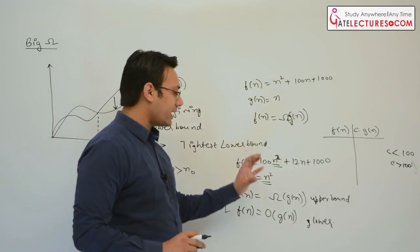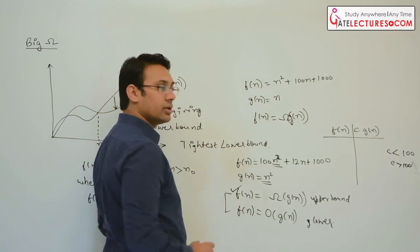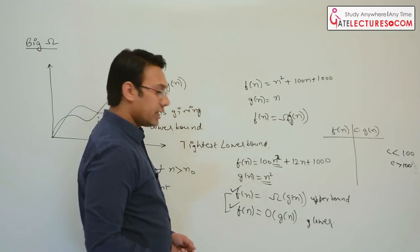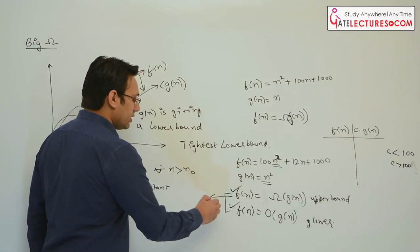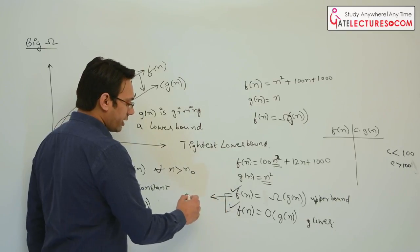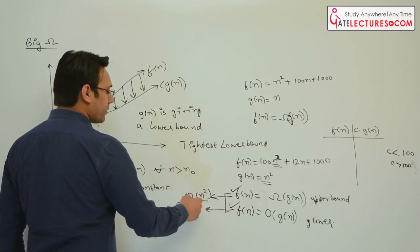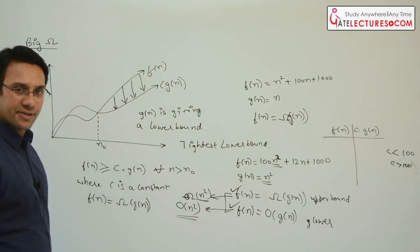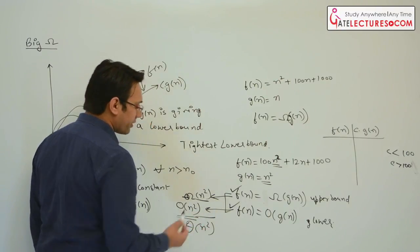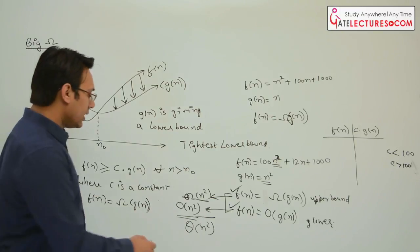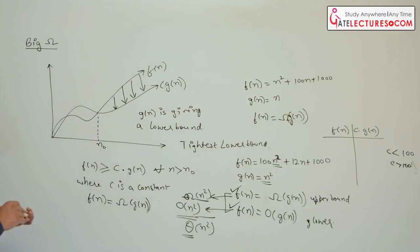So to summarize: if for a function you can give an upper bound, that is the order notation. If you can give a lower bound, that is the Omega notation. When both the tightest upper bound and the tightest lower bound are the same, then we write it as Theta of that function. I will take some examples to make this very clear.